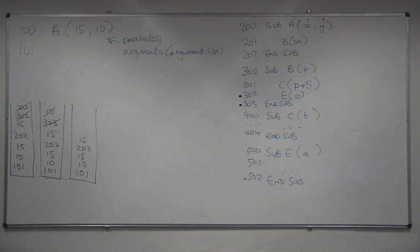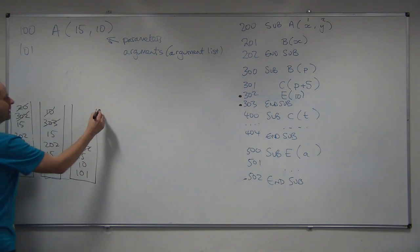So, I'm now back here, which is the end of the subroutine. This subroutine has one parameter. We need to discard that value and pick up the return address, 202. So, I'm going to redraw my stack.